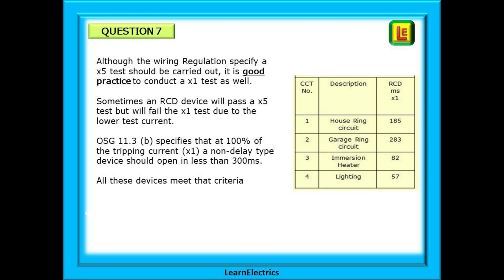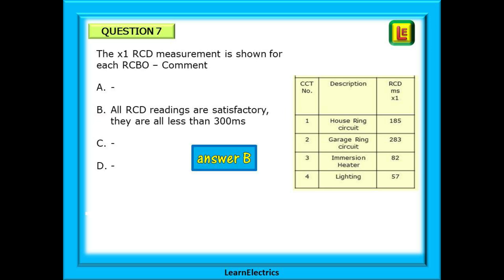The On-Site Guide, Part 11.3, Section B, specifies that at 100% of the tripping current, or x1, a non-delay type device should open in less than 300 milliseconds. And all these devices meet that criteria. They all pass. Our choice then should be answer B. All RCD readings are satisfactory. They are all less than 300 milliseconds.